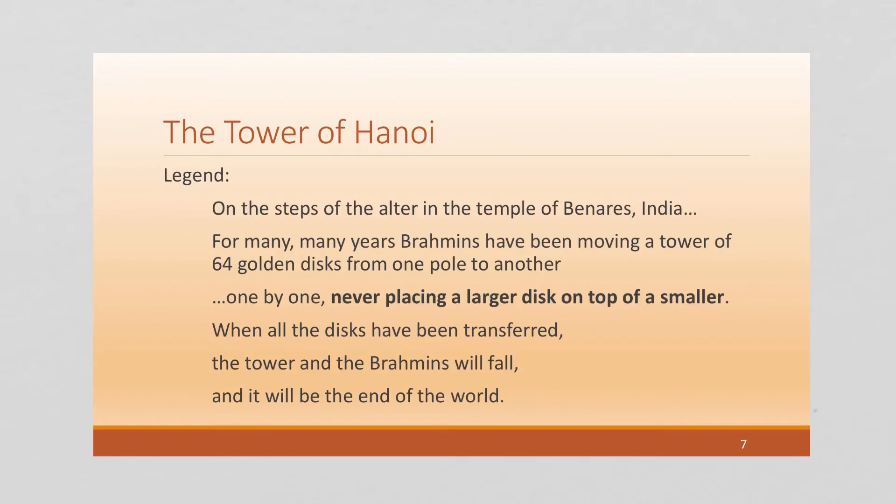This puzzle, the Tower of Hanoi, is based off of a made-up legend that says that this temple in India, the Brahmins, have been moving a tower of 64 golden discs from one pole to another, one by one, never placing a larger disc on top of a smaller. So there's three poles. You're going to see this here in the next couple of slides.